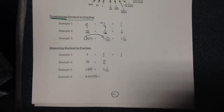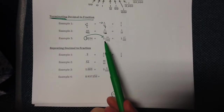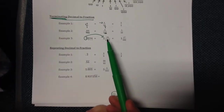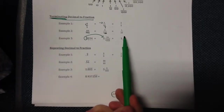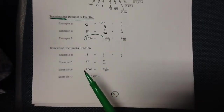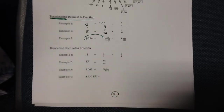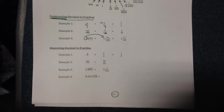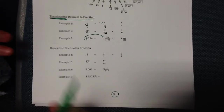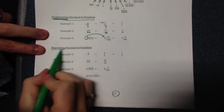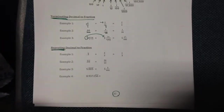The biggest number that can go into both thirty-four and one thousand is two, so we divide by two. We get seventeen on the top, and dividing one thousand by two gives us five hundred on the bottom.